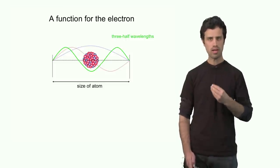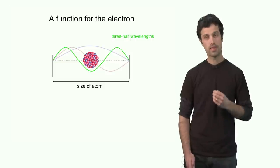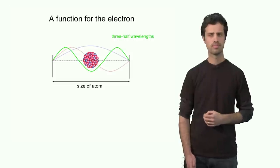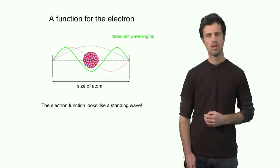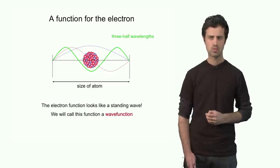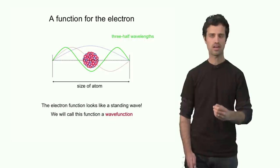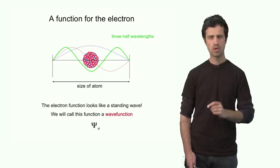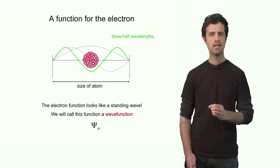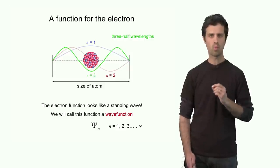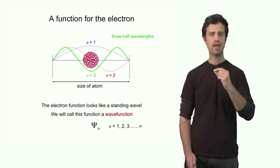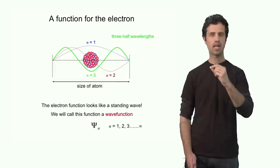So we can conclude at this particular point that the allowed solutions of the electron function look like a standing wave. We can call these functions, therefore, wave functions. And we will describe these wave functions by the Greek letter psi. We'll also indicate this psi with a label, the index n. And this n is an integer. It runs from 1 to infinity. In fact, it labels, in this case, the number of half wavelengths of the allowed function.